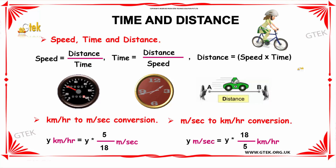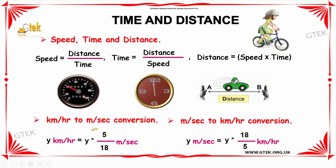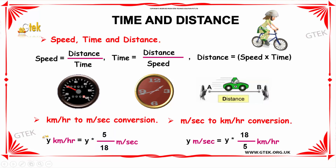A few more things to be considered in time and distance: if km per hour is given, we need to convert it into m per second. In order to convert km per hour to m per second, we need to multiply by 5/18 along with the given value. For example, if y km per hour is given, we multiply 5/18 by y to convert to m per second.